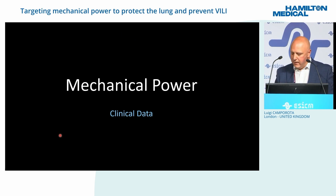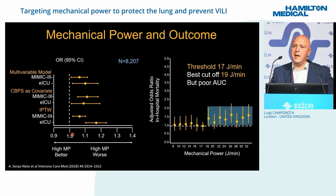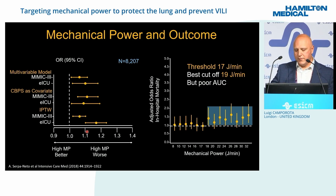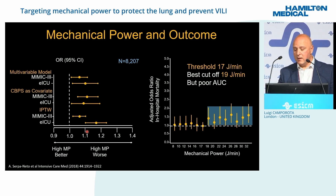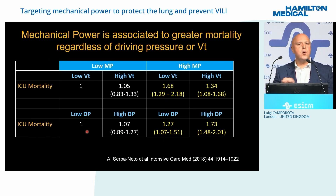Moving from the lab to the clinical situation, using large databases such as MIMIC and eICU with thousands of patients, you can see a correlation between mortality and mechanical power. The higher the mechanical power, the higher the risk of mortality. There seems to be a threshold around 17 to 19 joules per minute for increased risk, though the area under the curve in this study was modest. The key message is to think less in terms of single parameters and more in terms of the global measure.